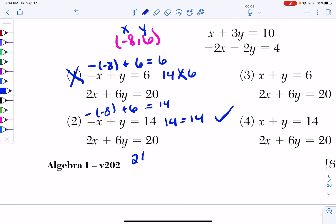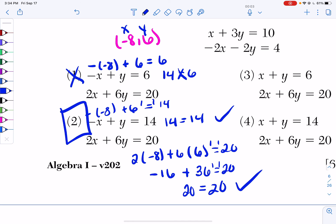So I have 2 times negative 8 plus 6 times 6. I'm saying that's equal to 20. 2 times negative 8 is negative 16. 6 times 6 is 36. Negative 16 plus 36 is 20. So 20 is equal to 20. So that works. So it's got to be choice 2 for this question.